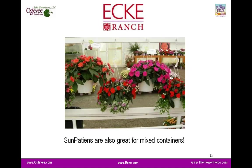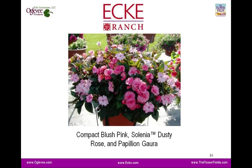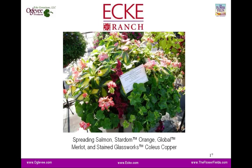SunPatiens also have some mixed container applications. We have hanging baskets shown at our PAC trial in April, mixed with Bacopa and Lamium. There's also a really cool container with compact blush pink, Selenia begonia, and Papillon gara — you can see the vigor of the SunPatiens has not taken over the other things in the container; it's balancing out quite nicely. The spreading and compact and vigorous varieties can all be used in containers, though for vigorous varieties you'll want to stay with larger containers for ease in production.